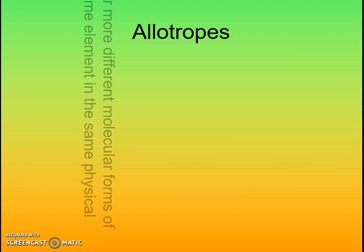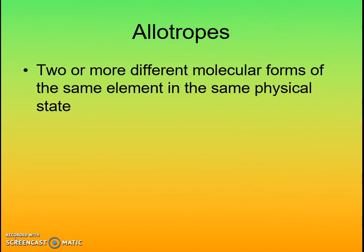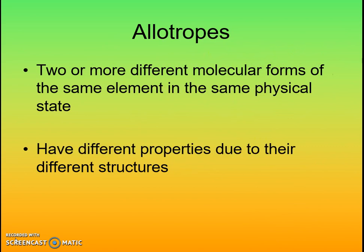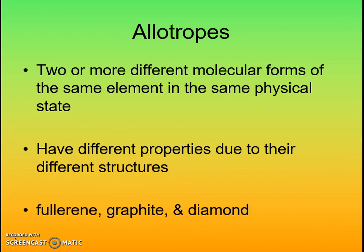Allotropes are a singular substance at the same state that actually have different ways in which they come together. They have two or more different molecular forms of that same element or compound in a physical state. The most famous example is carbon. Those different forms of carbon have very different properties because of their very different structures. We look at three different ones here: fullerene, graphite, and diamond.